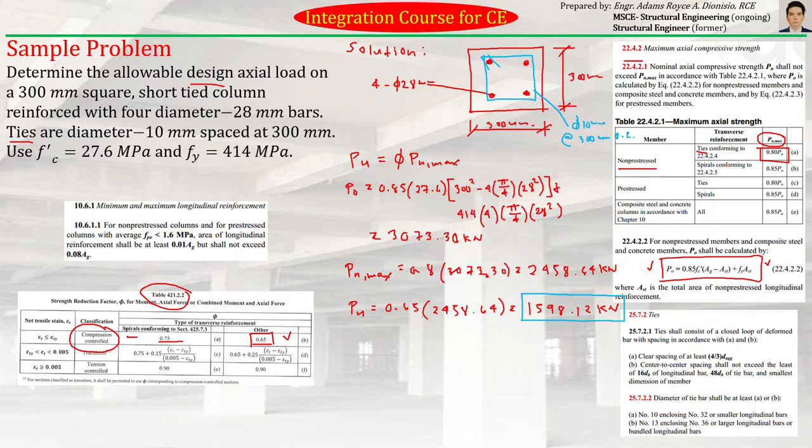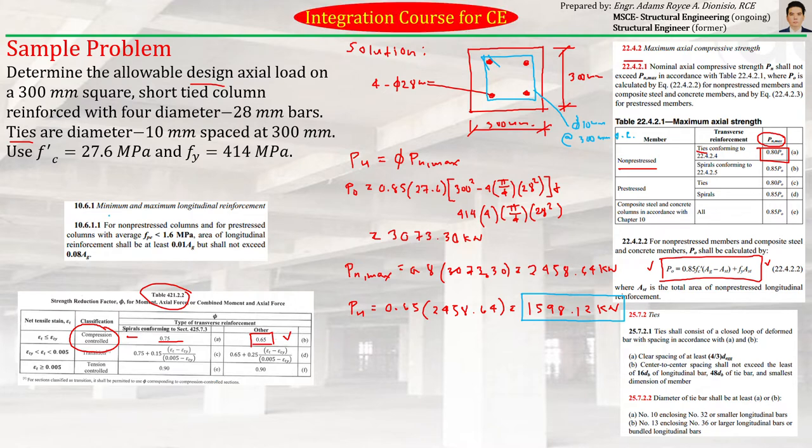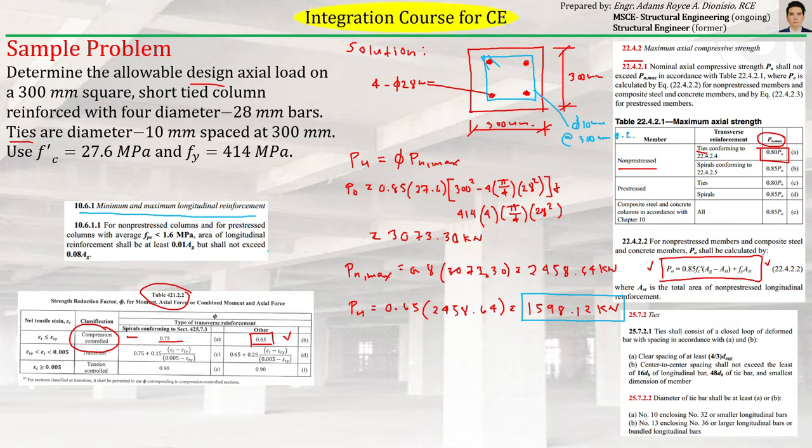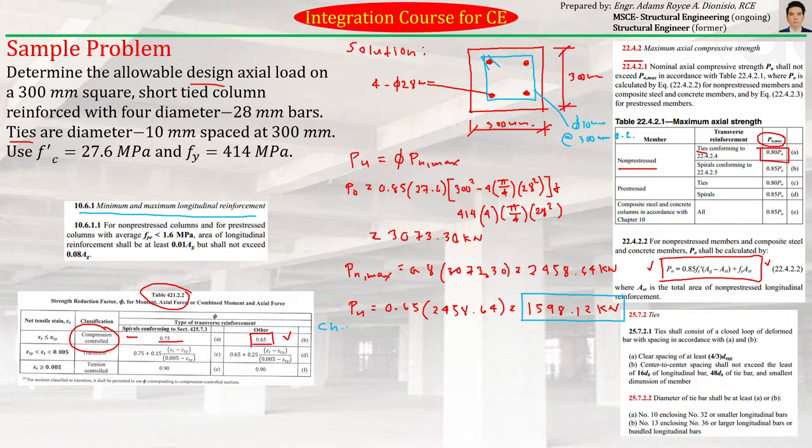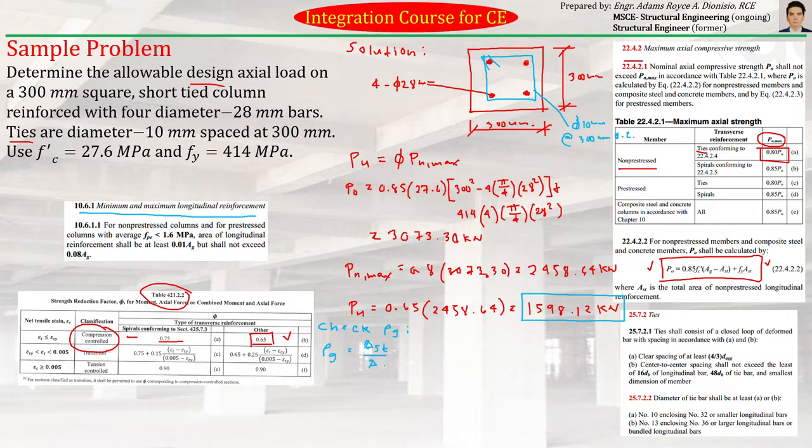If we want to check other parameters for this column, for example, the amount of reinforcement, which is row, we can also do so. Because we know that according to the code, there are minimum and maximum longitudinal reinforcement. So if we will try to check the row, or sometimes we also call it row G, because it's the row of the steel ratio of the whole section.